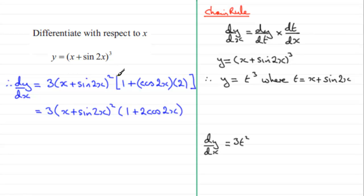Then I've got to multiply it by the differential of what I call t. In other words, dt dx. I've got to multiply it by the differential of this with respect to x. Now when I differentiate this, I'm going to get the differential of x is going to be 1. But then I've got this problem of differentiating sine 2x. And you may recall that I said, well, I've got to use the chain rule again.